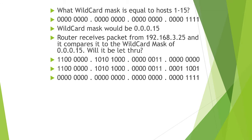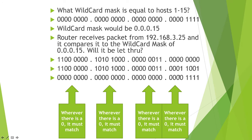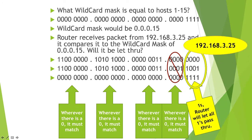The zeros tell us that whatever is in the host IP address must match the network address — and it does across the first three octets. But where the zeros appear in the fourth octet, it must also match — and here we have a mismatch in the bit position. So there's a problem. Wherever the ones are in the wildcard mask, it doesn't matter, but over here it does matter and we have a mismatch. So 192.168.3.25 will not be let through the router with a wildcard mask of 0.0.0.15 — it's a no-go.